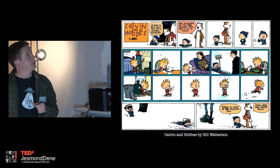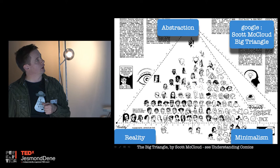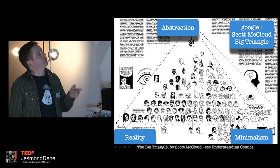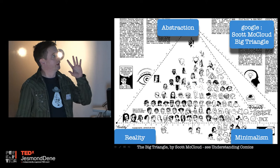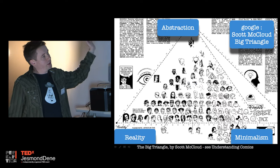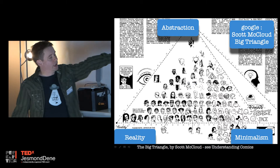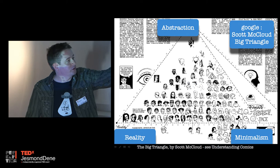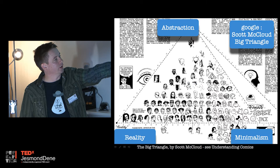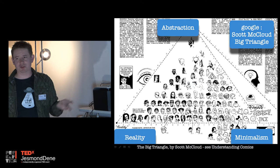Moving on from Calvin and Hobbes to talk about the artwork in comics — you can't really talk about comics without mentioning Scott McCloud. This is a diagram from his book Understanding Comics. It's essentially an axis, and you can put different kinds of artworks on it. Reality is down the bottom left — photo comics and the like. Towards the right-hand side: minimalism, stick men, words, and Tintin. At the top you tend to get more abstract comics — very cartoony, funny animal-style comics.